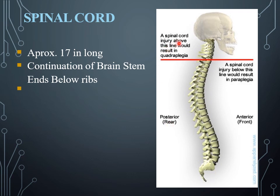Spinal cord injury may occur at different levels. If it occurs above a certain line in the cervical region, it will result in quadriplegia. If it occurs below this region, it will result in paraplegia.